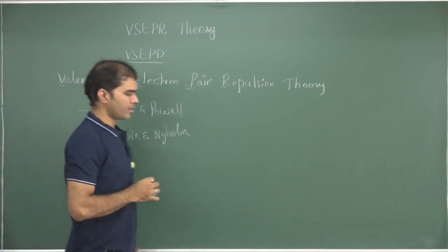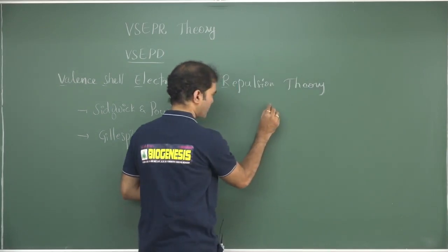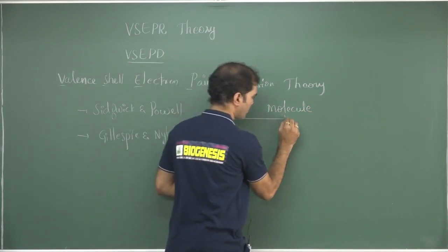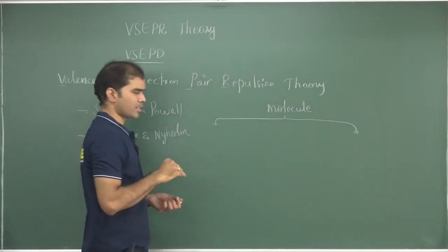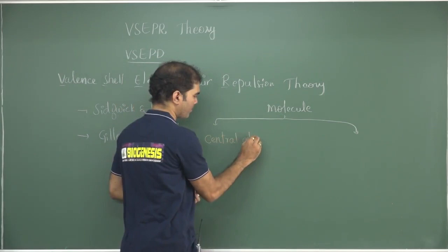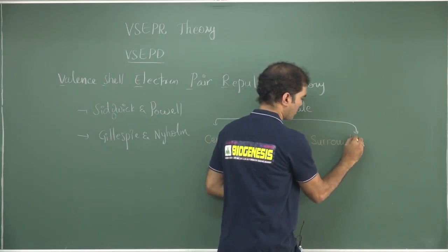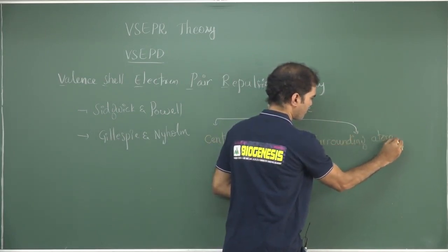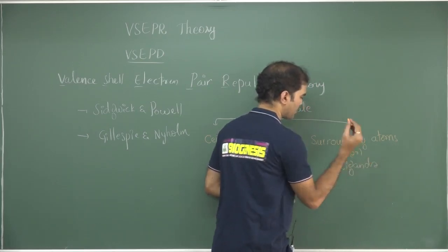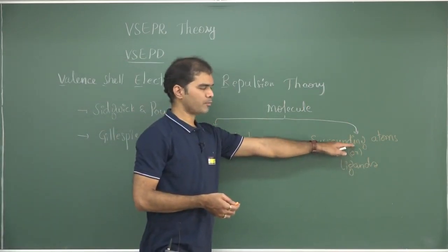To understand this theory in simpler form: whatever molecule we choose, the atoms are classified into two types. One is the central atom — there will be only one. The other type we call surrounding atoms. At an advanced level, we also call them ligands. Usually the term ligand is used in coordination complexes, but at the advanced level of VSEPR, we also use the term ligands for the surrounding atoms.